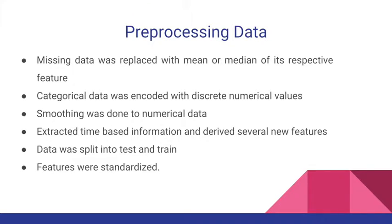Smoothing was applied to numerical values in case there were any zeros in the corresponding features. We also extracted time-based information and derived several new features like the uniformity of tweets and tweets per day. Finally, we split the data into test and training sets — 20% test and 80% training — and applied feature scaling using a standard scaler to bring all features into a standard scale.